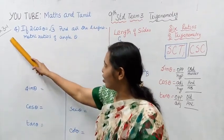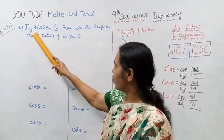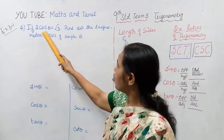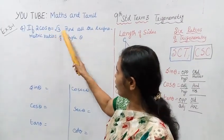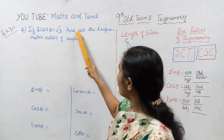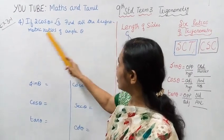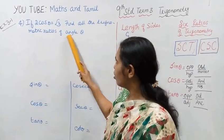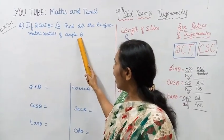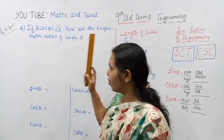Exercise 3.1, 4th sample problem: If 2 cos theta equal to root 3, find all the trigonometric ratios of angle theta.